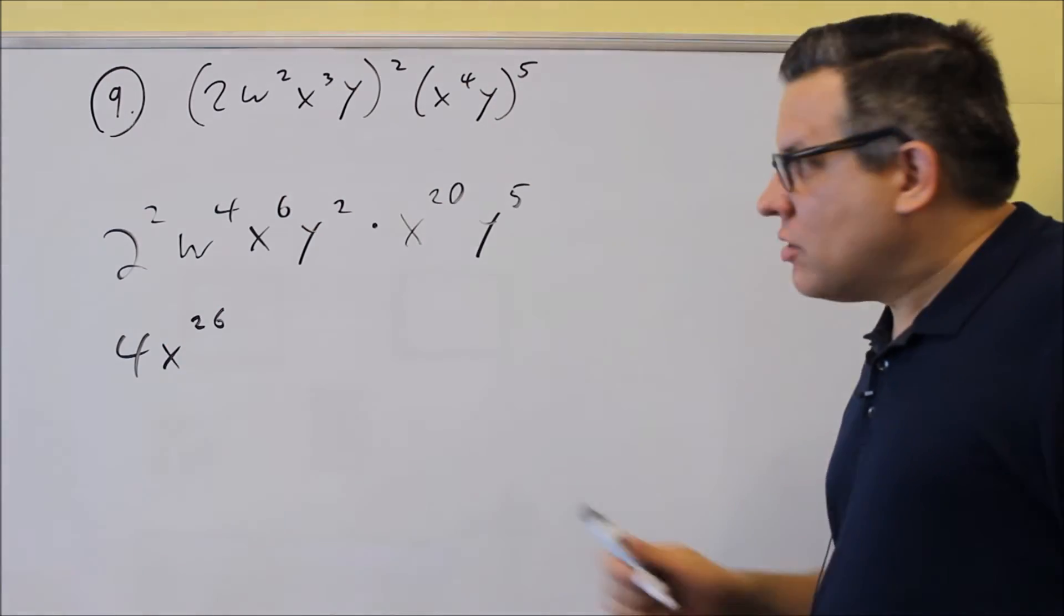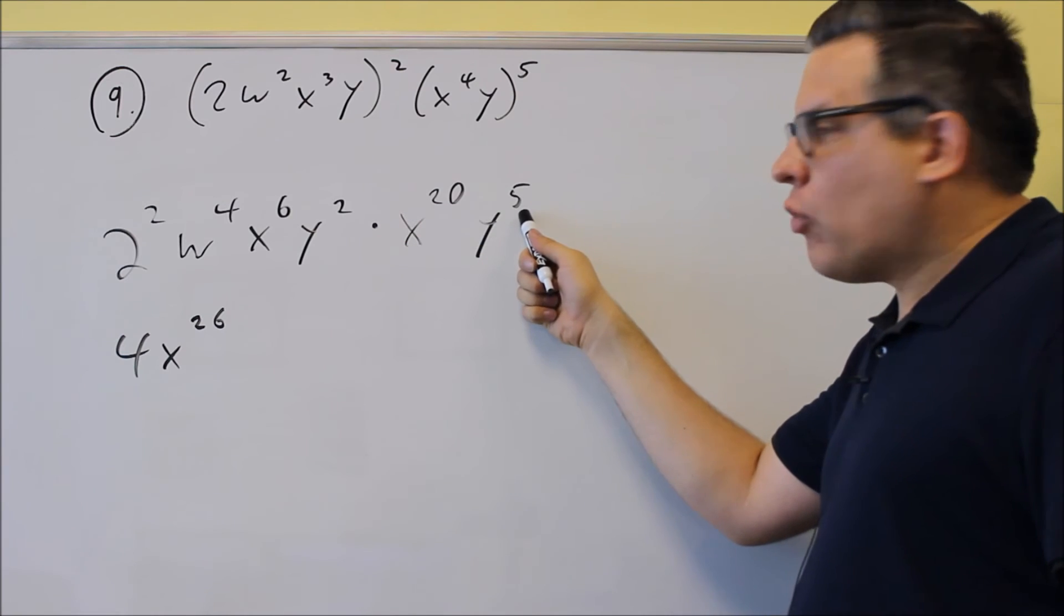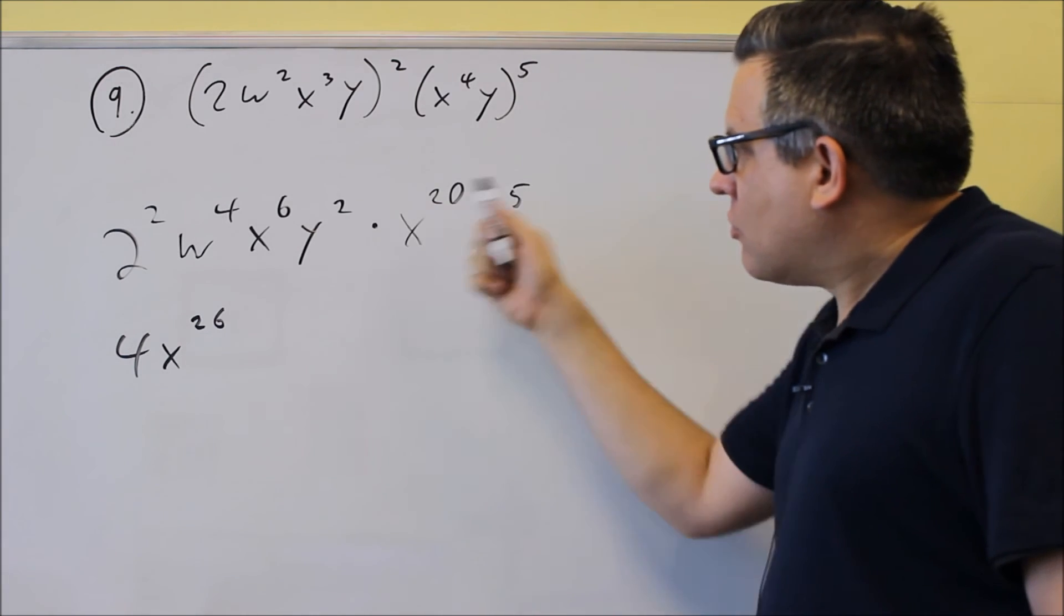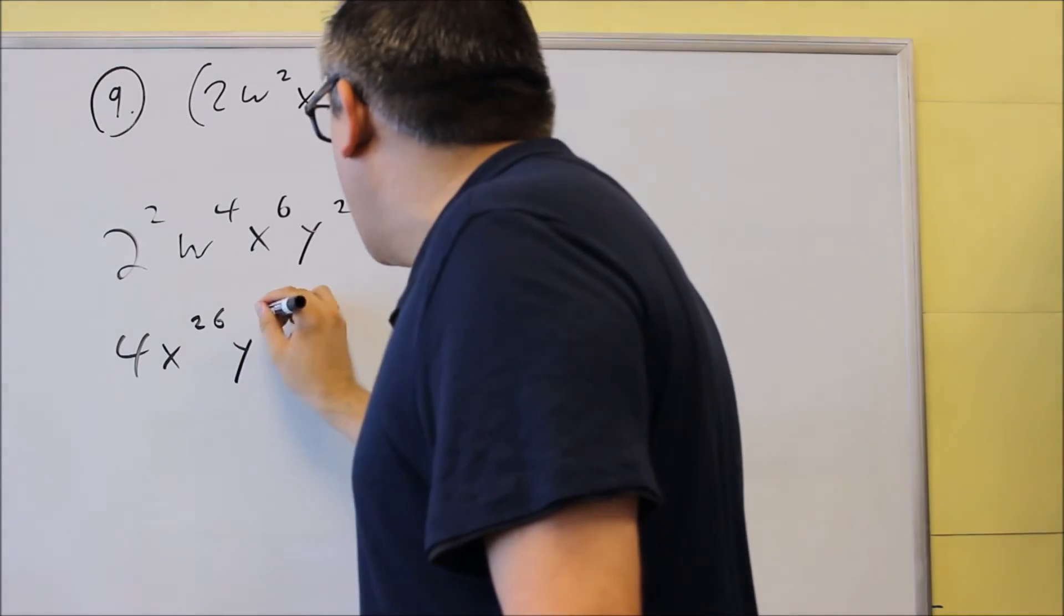Let's do the Y's next. Y squared, and I have Y to the fifth. Another one, I'm going to add the exponents. So 2 plus 5 gives you 7. So Y to the seventh power.